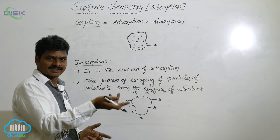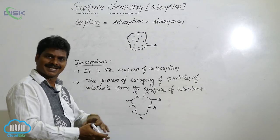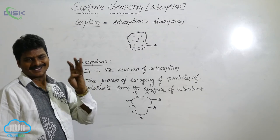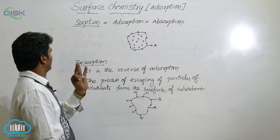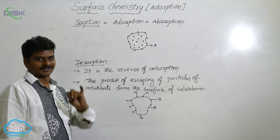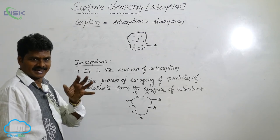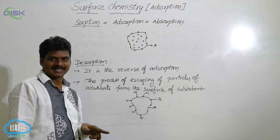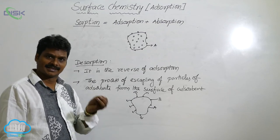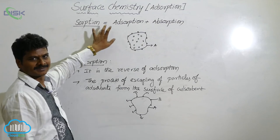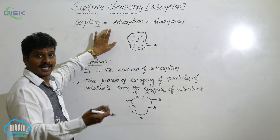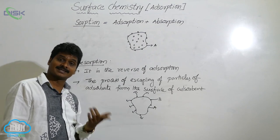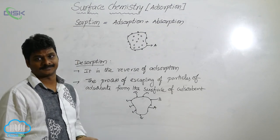So till now we have discussed four words: adsorption, desorption, absorption, and sorption. Adsorption means concentration of particles over the surface. Absorption means concentration of particles within the bulk. Sorption means both absorption and adsorption. Desorption means the reverse of adsorption.